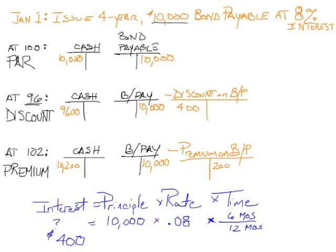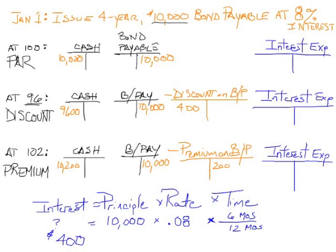Let's handle the par situation first. We have interest expense of $400 due on June 30th or July 1st, and we're going to have to pay that with cash. So we credit cash $400 and debit interest expense $400. Pretty simple.